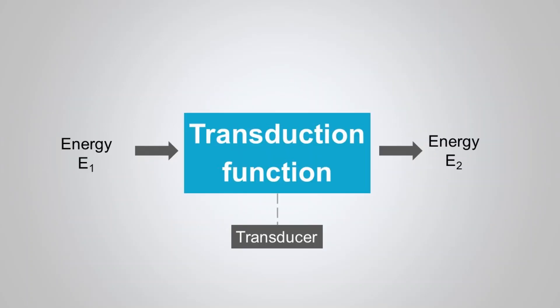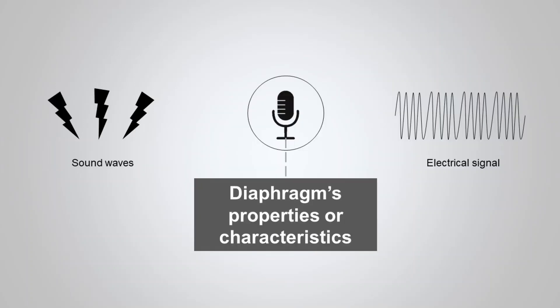A transducer is an essential part of any information processing system that operates in more than one physical domain, such as optical, electrical, magnetic, thermal, and mechanical domains. A transducer in general is defined as a device that converts one form of energy into another using the transduction process. The transduction process or function represents the characteristics or properties of the device used for energy conversion. For example, the diaphragm in a microphone converts vibrations generated by sound waves into electrical signals, and this property of the diaphragm is represented as a transduction function or process.